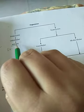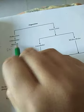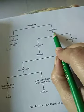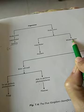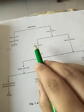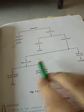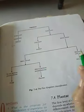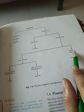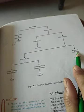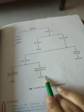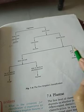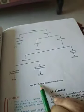Monera is unicellular and prokaryotic. Eukaryotic organisms can be unicellular or multicellular. Unicellular eukaryotes are Protista. Multicellular eukaryotes with cell walls are Fungi and Plants. This is the five kingdom classification.